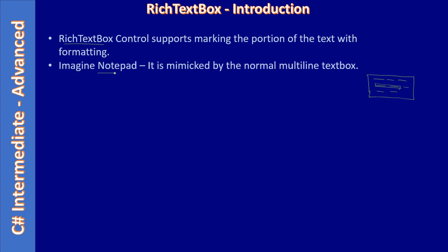Imagine the notepad application — it is mimicked by the normal multi-line text box. When a text box is set as a multi-line text box it will mimic notepad. In notepad we cannot set bold or italic for a particular portion of text; you can apply bold and italic but it applies to the entire document. You cannot set bold for a specific word in notepad, and the same applies to the multi-line text box control.